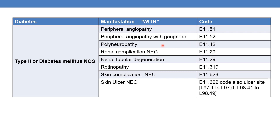For diabetes mellitus with polyneuropathy, the code is E11.42. For diabetes mellitus with renal complication NEC — not elsewhere classifiable — the code is E11.29. Similarly, for renal tubular degeneration, the code is also E11.29. In simple words, any other kidney-related or renal complication apart from CKD or simple nephropathy should be coded E11.29.